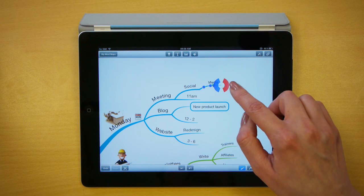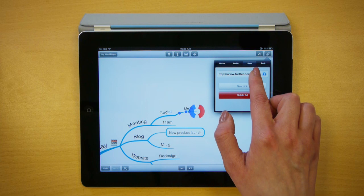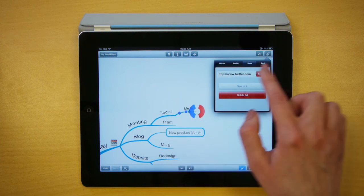If you want to delete a link, again make sure the branch is selected, go to the attachments icon, swipe across the URL, and select delete.